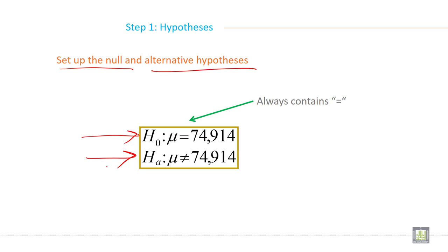The null hypothesis always contains an equal sign. The null hypothesis always has this equal sign. The alternative hypothesis has three possible signs: greater than, less than, or not equal.